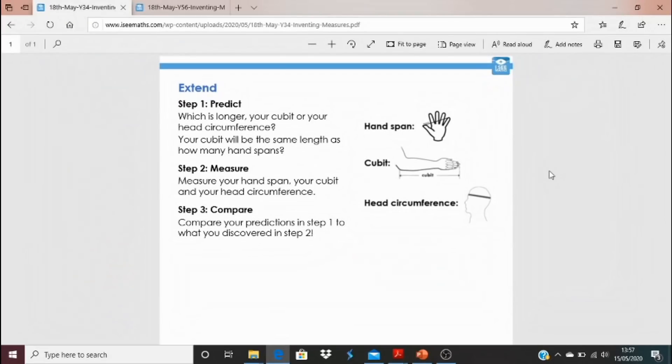Now, like I said in the introduction, you might feel like you've gone far enough already actually on the video. But if you want a little extend task, here it is. So, your hand span is the length between, if you really stretch your fingers out between your thumb, the tip of your thumb and the tip of your little finger. We talked about a cubit from an elbow to the edge of your fingers. And then your head circumference is measuring around your head. For another little challenge, I want you to have a go at this if you feel that you're ready for that. So, the first step is predict. Which do you think is longer, your cubit or your head circumference? Secondly, your cubit will be about the same length as how many hands spans. So, predict that before you measure.